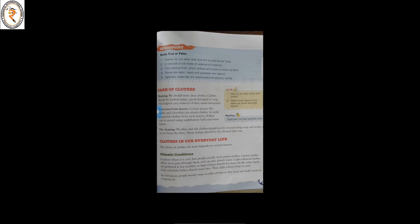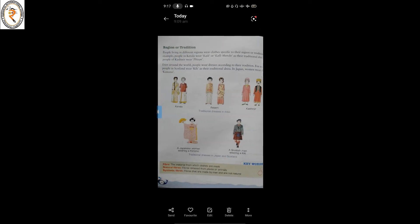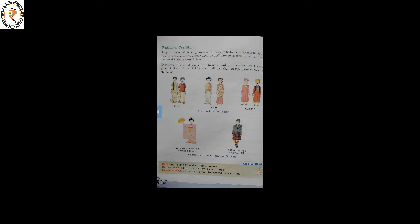Dark-colored clothes absorb more heat, so light colors keep us cool. In cool places, people usually wear woolen clothes as they keep our body warm by trapping air. Region or tradition: not only according to climatic condition, but also according to their place, people wear a different style of clothes. People in Kerala wear kaili or mundu; people of Kashmir wear piran. Around the world, people wear dresses according to their tradition — for example, people in Scotland wear a kilt, and in Japan women wear the kimono.